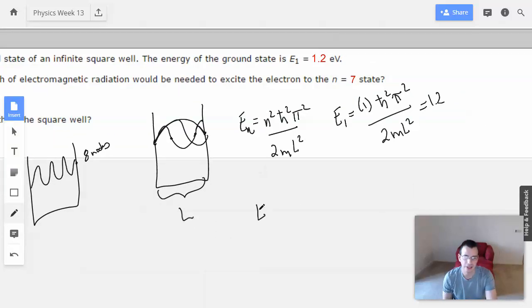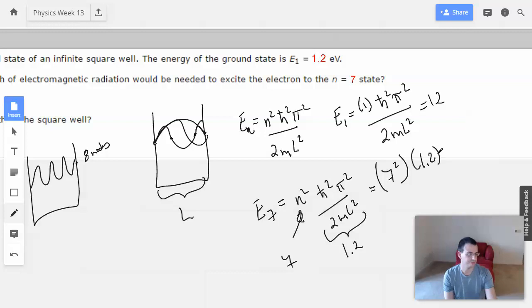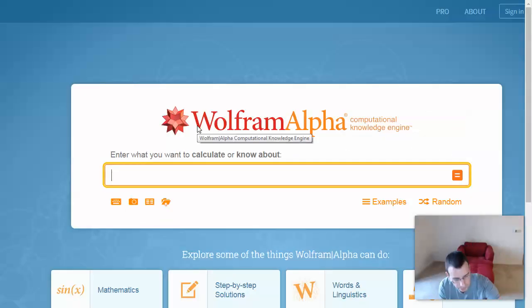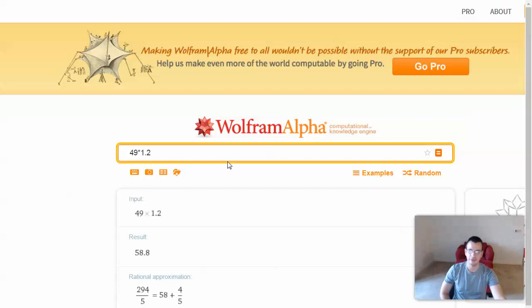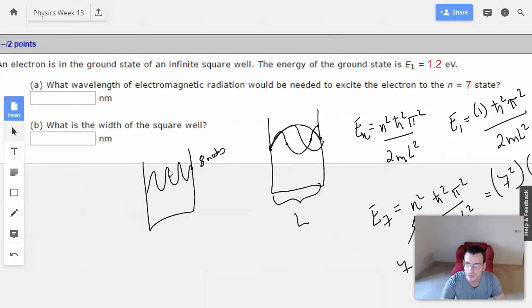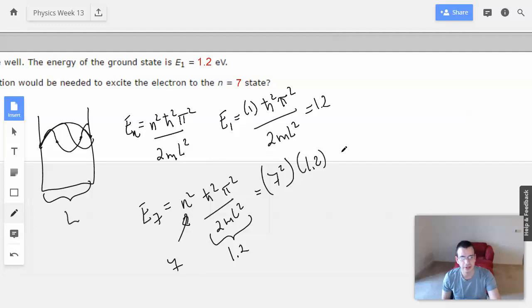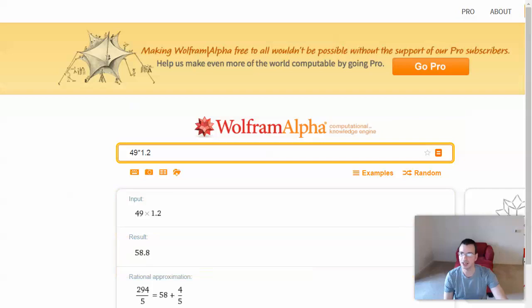So then, E7 equals n squared h bar squared pi squared over 2 m l squared. Well, we already know from the first part that this is 1.2. We know that n, in this case, is going to be 7. So this is going to be 7 squared times 1.2. So 49 times 1.2. We have 58.8 equals 58.8 electron volts.